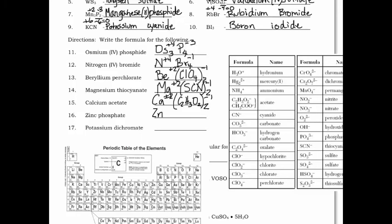Next: zinc is in group 12 with a plus two. Phosphate is in Table E — PO₄, and it's negative three. They do not cancel out and have no common factor, so we swap and drop. Next: potassium is a group one element with a plus one. Dichromate is also a polyatomic — careful, chromate is different. Dichromate is Cr₂O₇, and it's a minus two. They don't cancel out, they don't have a common factor, so we swap and drop.